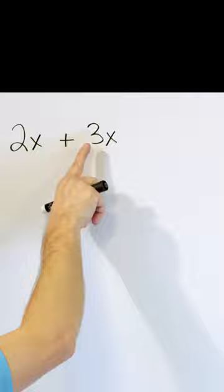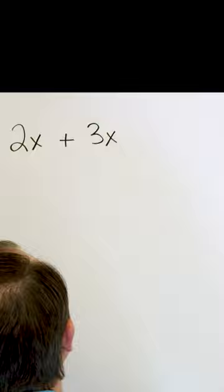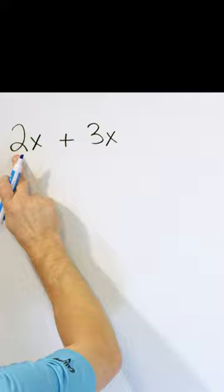So because they match, we have 2x and 3x, and the variables match and everything matches. The only thing different is the numbers. We can just say 2 plus 3 is 5, but not just 5, 5x.